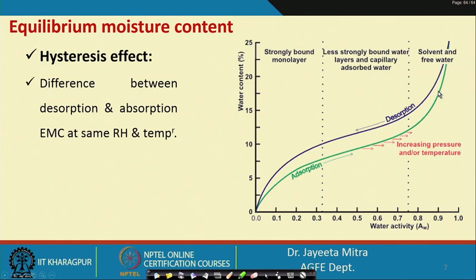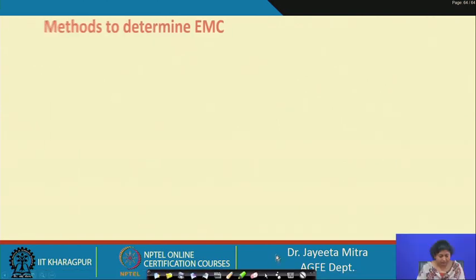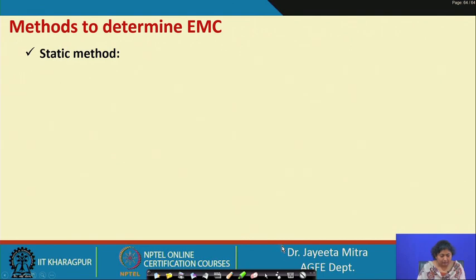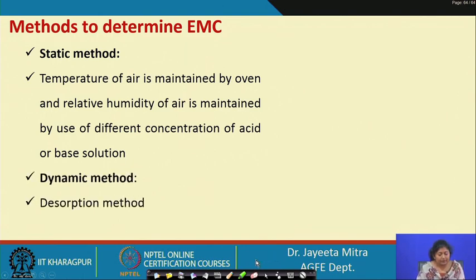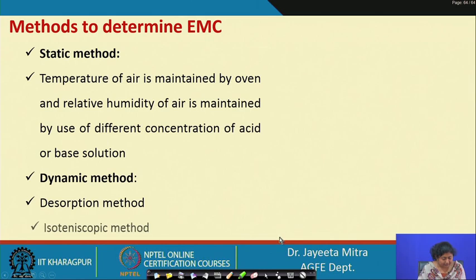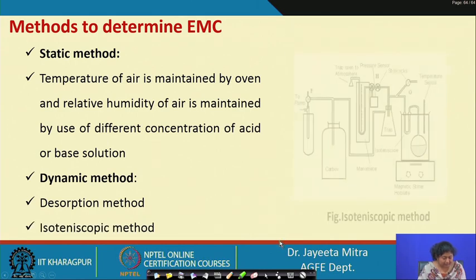We can have different temperature sorption isotherms. The methods to determine the EMC are: the static method and the dynamic method. In the static method, the temperature of the air is maintained by an oven and the relative humidity is maintained using different concentrations of solution — basically different salt solutions to maintain different water activity levels. The dynamic method includes the desorption method and the isotentioscopic method.